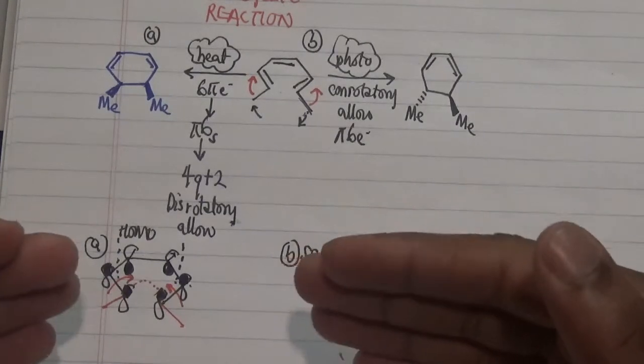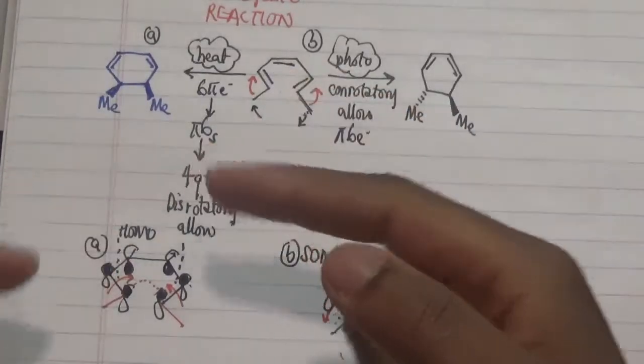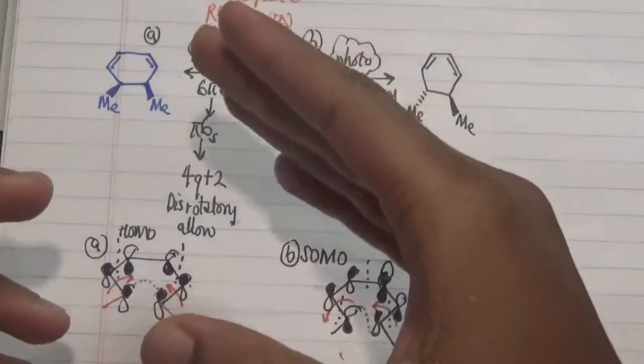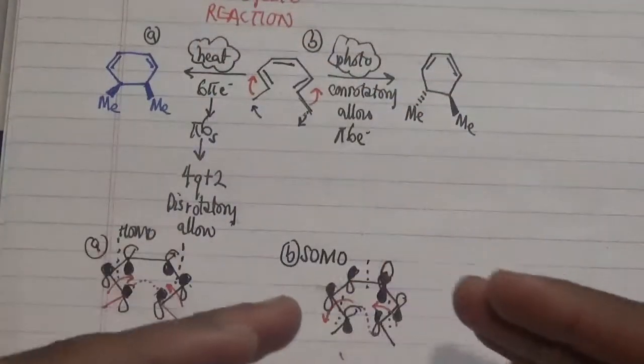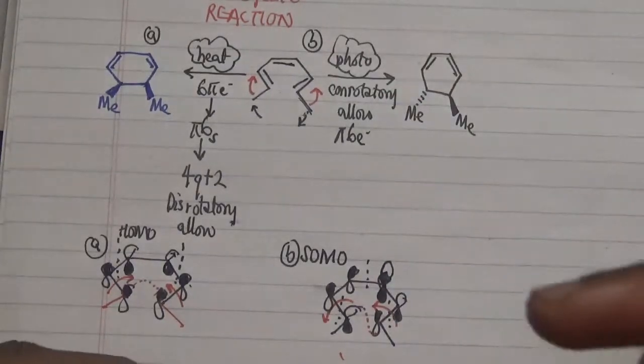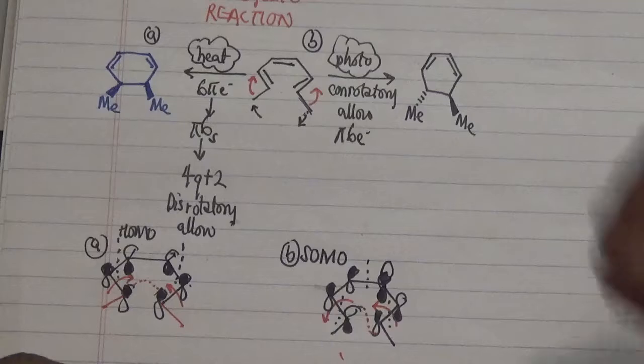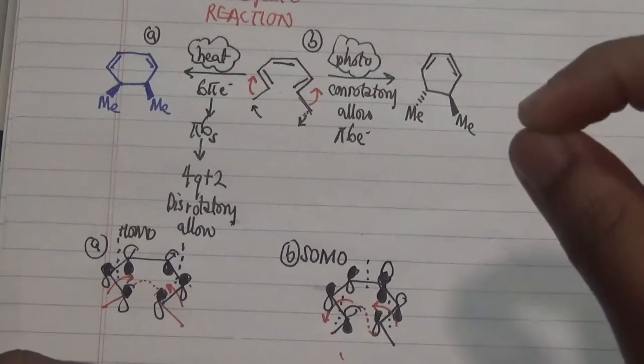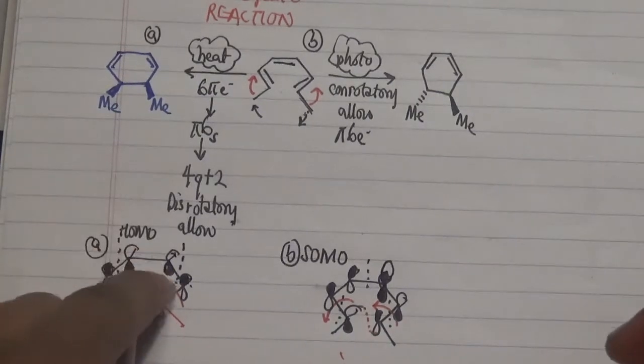We looked at the HOMO state of the disrotatory process when subjected to thermal conditions versus that of the SOMO when looking at the photochemical process, because one electron has been excited to the previous LUMO.